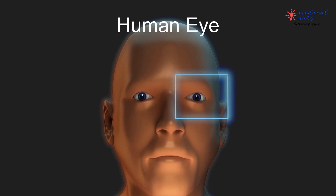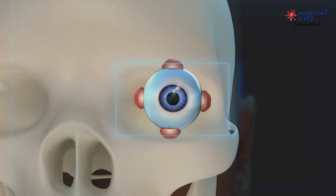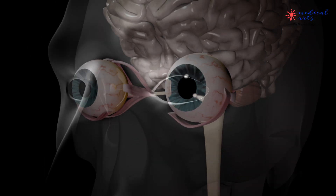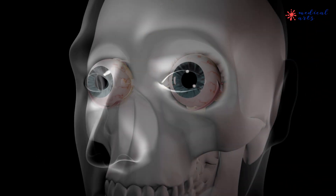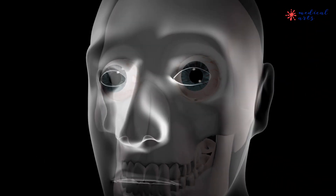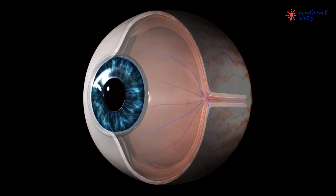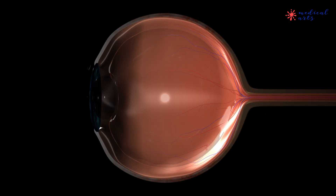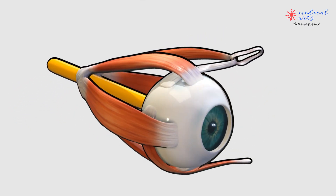The human eye is truly a marvel of nature, allowing us to see and experience the world around us. But do you know exactly what happens when you see an object? How does light enter your eye and translate into an image you can understand? Well, let's take a closer look at the anatomy and functions of the human eye.